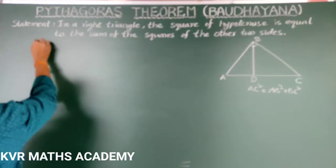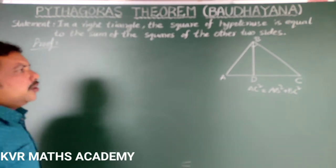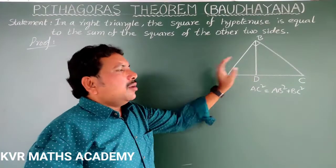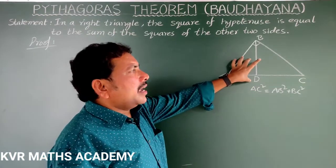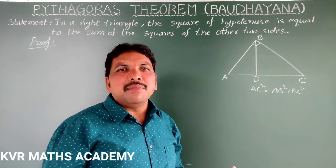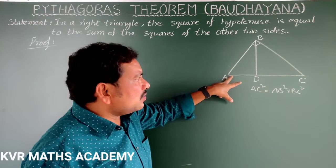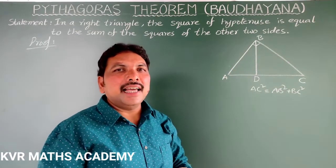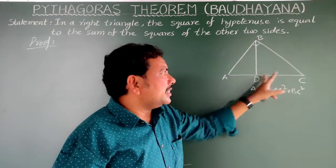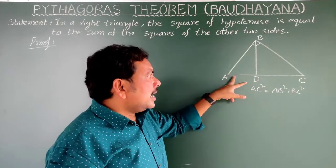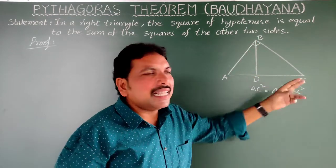Proof. By using the properties of similar triangles, we will prove this. In this figure, totally how many triangles are there? ABC is the main triangle. Next, ADB is another one, and BDC is another one. So totally three triangles, all of which are right-angled triangles because BD is perpendicular to AC.